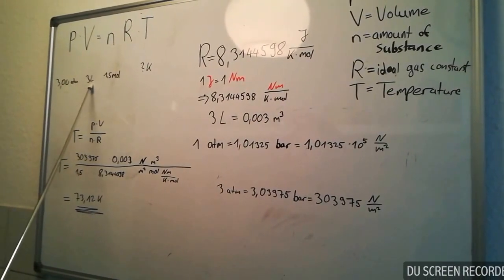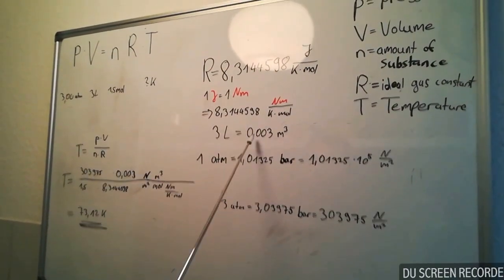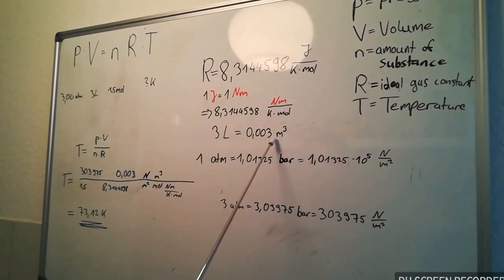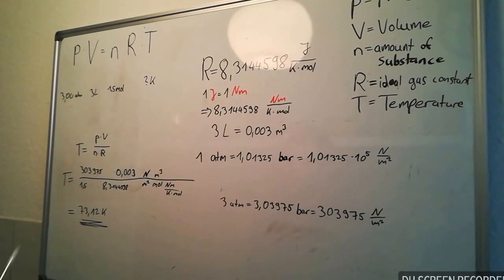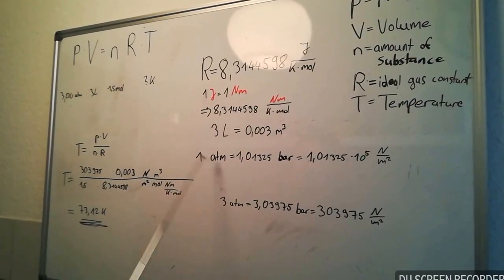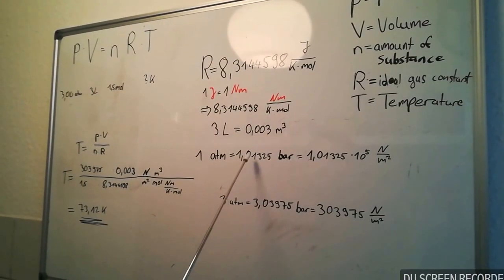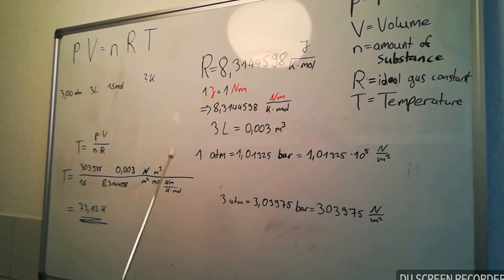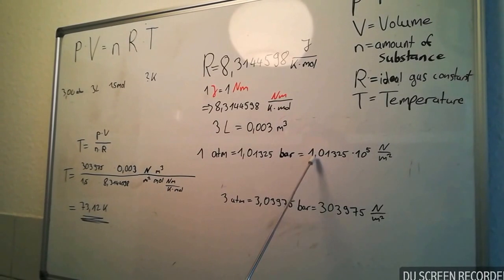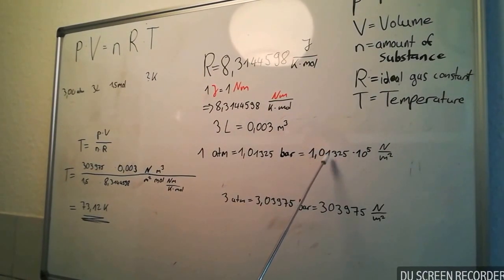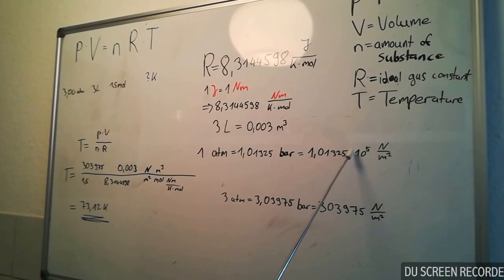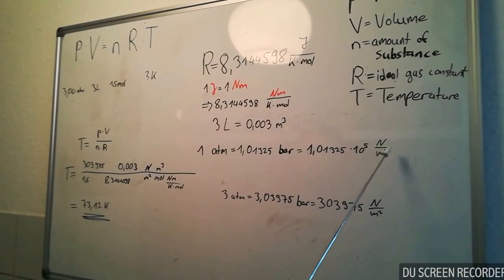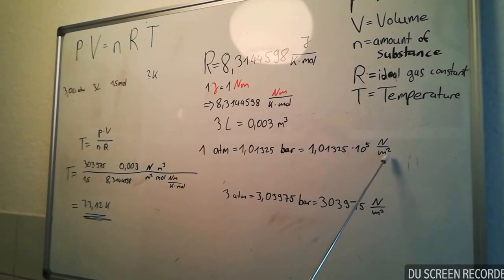Our 3 liters are equal to 0.003 cubic meter. And our 3 atm's: 1 atm is equal to 1.01325 bar, and this is equal to 1.01325 multiplied with 10 to the power of 5 newton per square meter.